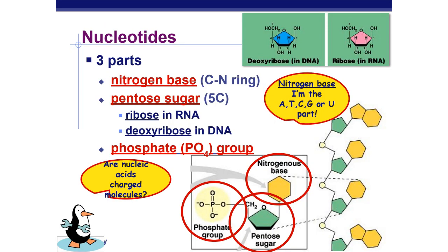The monomer of DNA is a nucleotide — this is the monomer of DNA as well as RNA. That nucleotide has three parts: a nitrogen base, a pentose sugar (which is a 5-carbon sugar), and a phosphate group. You have to remember these three parts of a nucleotide. Nucleotide is the monomer of the nucleic acids DNA and RNA, and that nucleotide consists of a nitrogen base, a 5-carbon sugar, and a phosphate group.